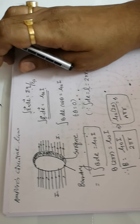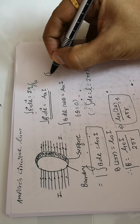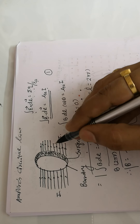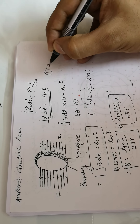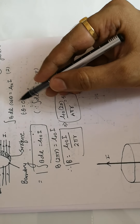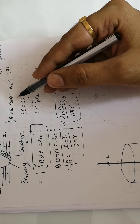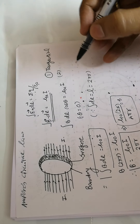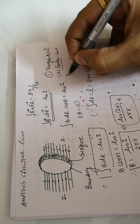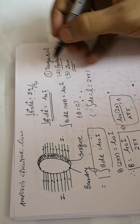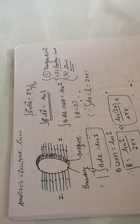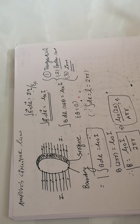Ampere's circuit law can yield three possible values for the magnetic field component. If current is passing through a segment, the field component can be tangential. If theta equals pi by 2 (perpendicular), there would be no contribution — no magnetic flux. So only three cases exist: the magnetic field component is either tangential, perpendicular, or zero. No other case is possible.